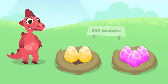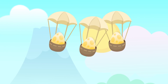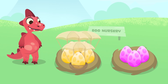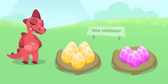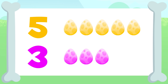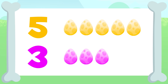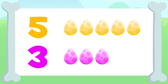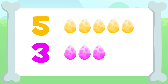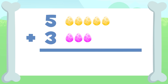Whoa, more eggs are falling down! Let's add them up to find out how many eggs in total you'll have to look after. Up here there are one, two, three, four, and five eggs, and down there we have one, two, and three eggs. We have to add five plus three.